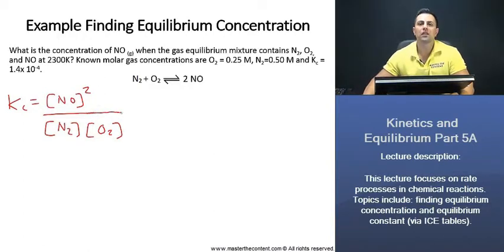What is it that we're looking for? It's asking us what is the concentration of nitric oxide. So if it's nitric oxide that we're looking for, then we should isolate for nitric oxide. And we can do so by taking the square root of both sides.